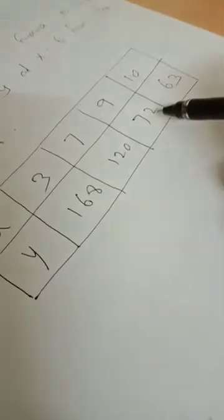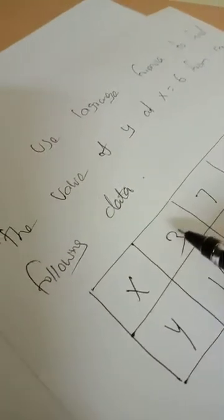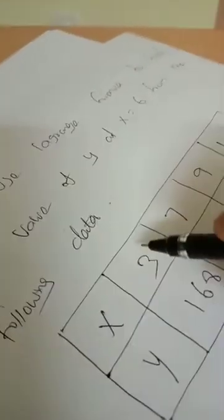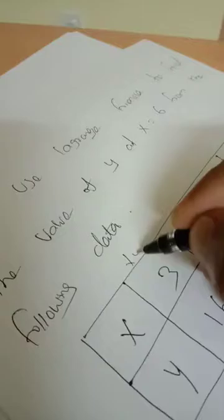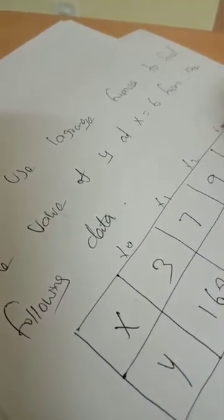So, the first problem is this: 3, 7, 9, 10, so this is x value. And y is 168, 120, 172, then 63. So if we start the formula, this is x0, x1, x2, x3.